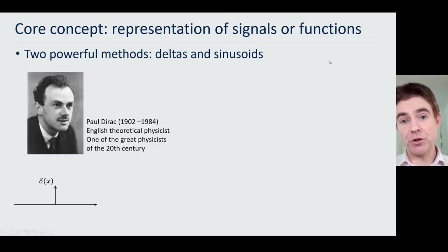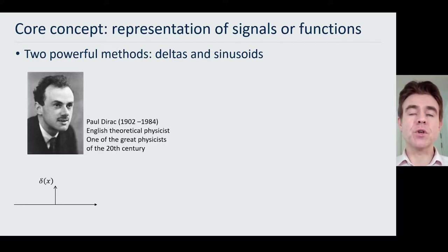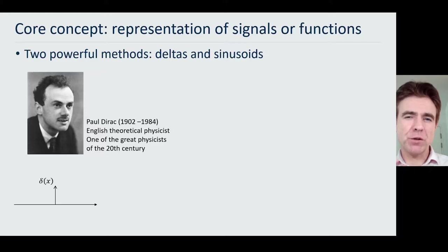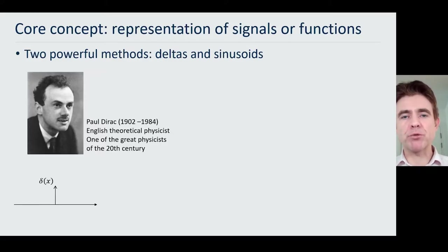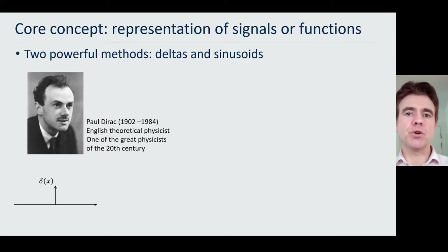This is core concept number one: the representation of signals or functions. Later on in this talk, I'll cover examples of signals and functions, but here I just want to convey the core concept of how we represent signals or functions. At the heart of signals and systems, there are two representations: the delta representation and the Fourier representation.